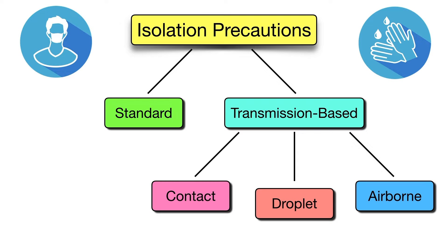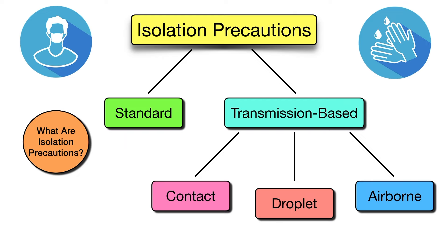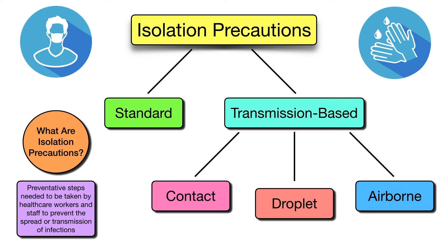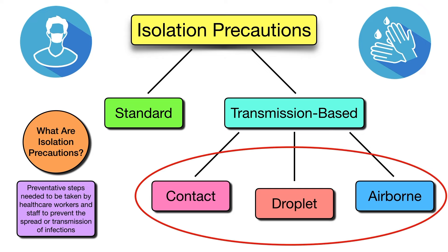The transmission-based precautions can be broken down into three categories: contact, droplet, and airborne precautions. By the end of this video, you'll know everything you need to know for these precautions and the diseases included in each category, and you'll be given several mnemonics and tricks to remember them all. Isolation precautions are the preventative steps needed to be taken by healthcare workers and staff to prevent the spread or transmission of infections.